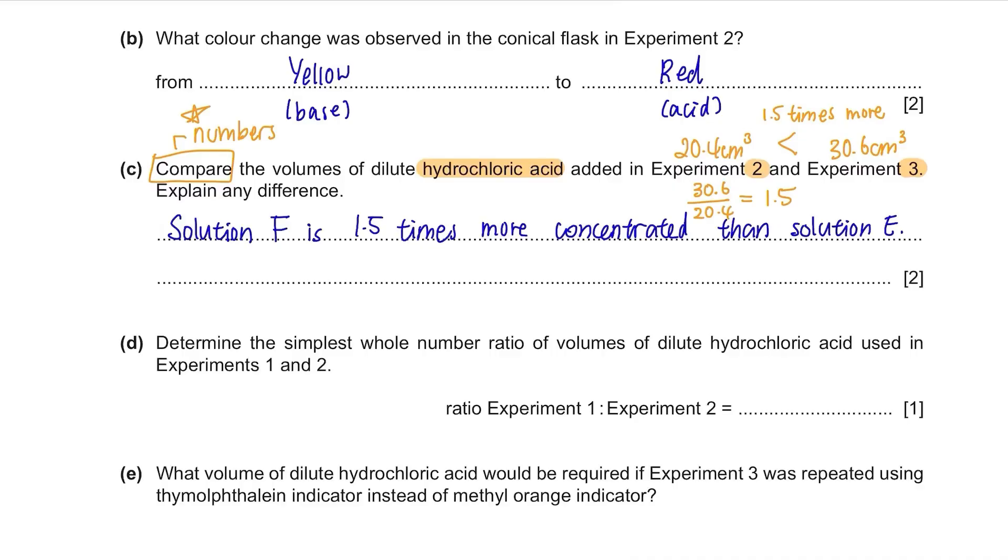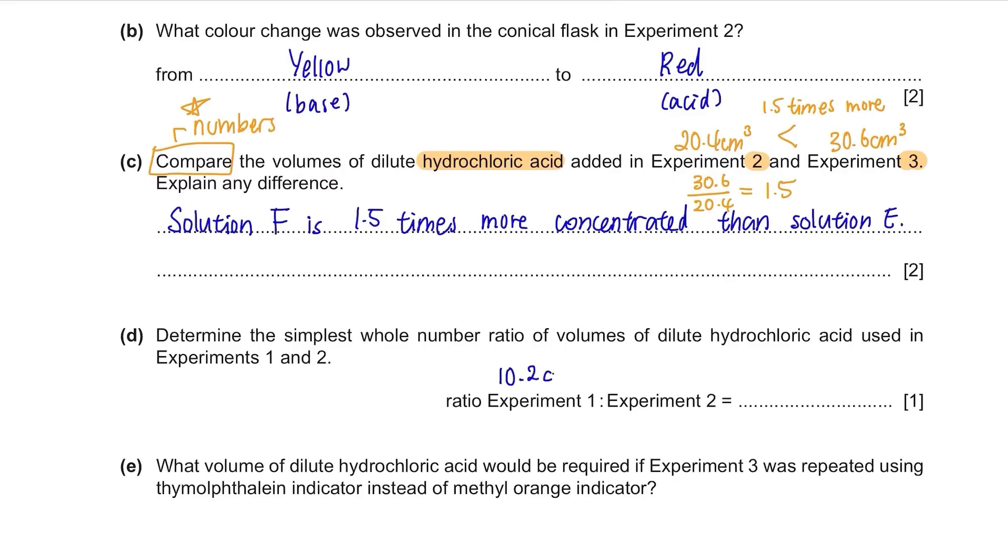Part D. Determine the simplest whole number ratio of volumes of dilute hydrochloric acid used in experiments 1 and 2. In experiment 1, they used 10.2 cm³ and in experiment 2, they used 20.4 cm³. So it's 1 is to 2.